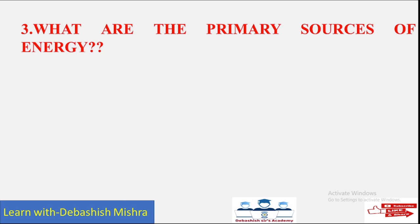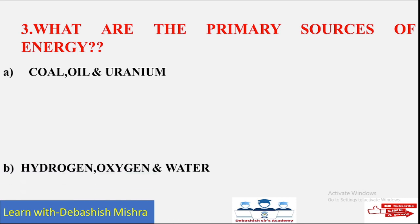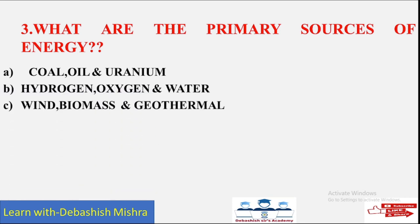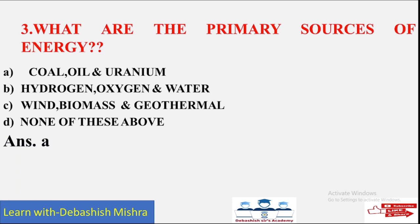Going to question number three: What are the primary sources of energy? Options are: A) Coal, oil and uranium; B) Hydrogen, oxygen and water; C) Wind, biomass and geothermal; D) None of these. The answer is option A — coal, oil and uranium.